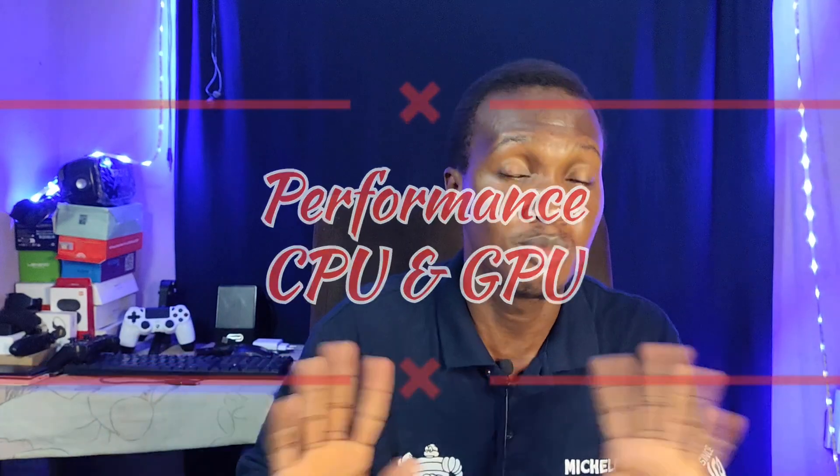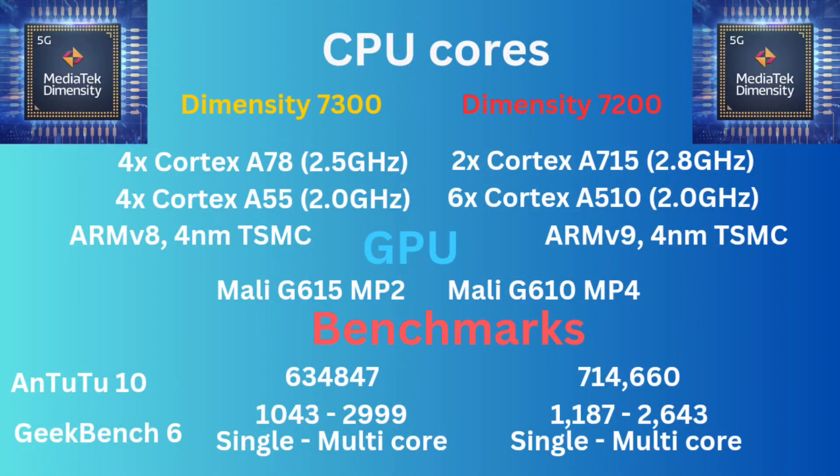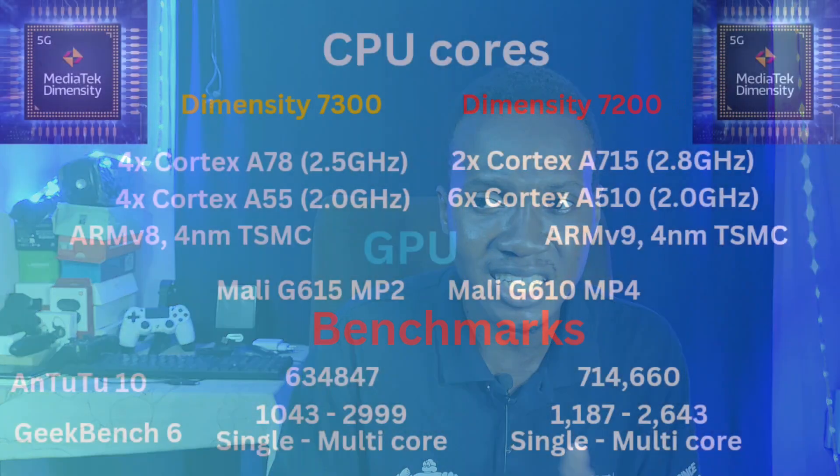Let's go into performance — that's the first thing I always look at. I'm big about performance because I like to play games and handle apps. Now this SOC uses four ARM Cortex A78 CPU cores running at 2.5 GHz. There's nothing wrong with going with the A78 — A78 CPU cores were used in flagships once upon a time. If you check an SOC like the Snapdragon 865, it uses A78. Even the 860 and the 870 all use ARM Cortex A78 CPU cores.